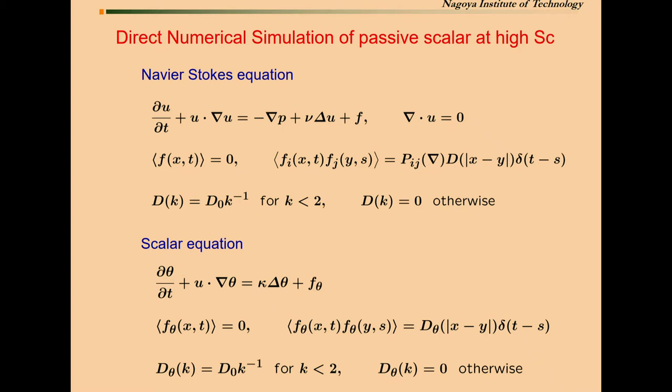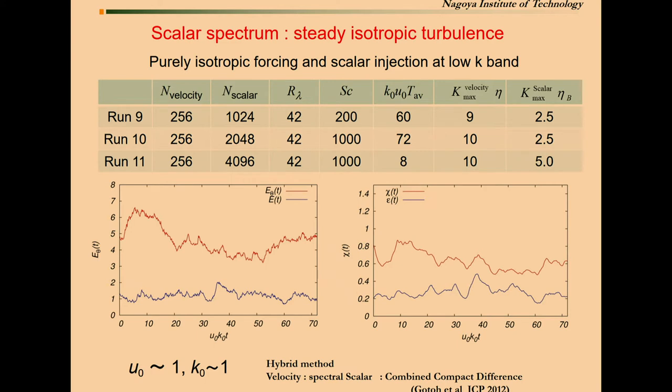To approach this problem, we did some first step. We did some computation. We solved the Navier-Stokes and the scalar equation. Both are excited by random force or random injection, which is delta correlated in time and applied only at low wave number range. The range of the parameter of Schmidt number is 200 to 20,000. And the resolution is around here.